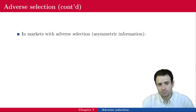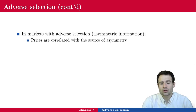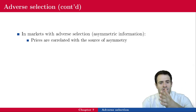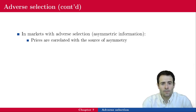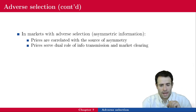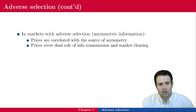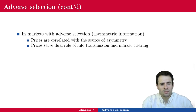In markets with adverse selection, prices are correlated with the source of asymmetry. Prices play a dual role: on one hand they do the usual market clearing — demand equals supply — but they also transmit information to the party that didn't have it in the first place. When buyers see that the price is between $500 and $1,000, they know it's a lemon, and now everybody has the same information about the quality of the car.